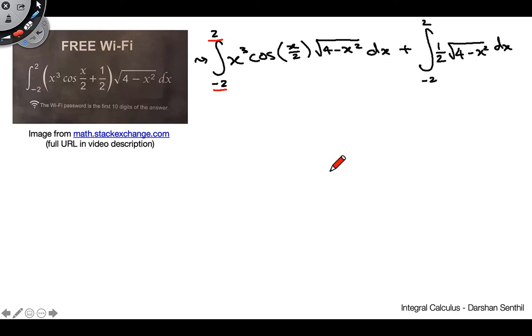Because remember in the previous video, we talked about how odd functions, because of their symmetry about the origin, and line y equals x, they actually, if we have an integral with symmetric bounds here, that's going to be 0.